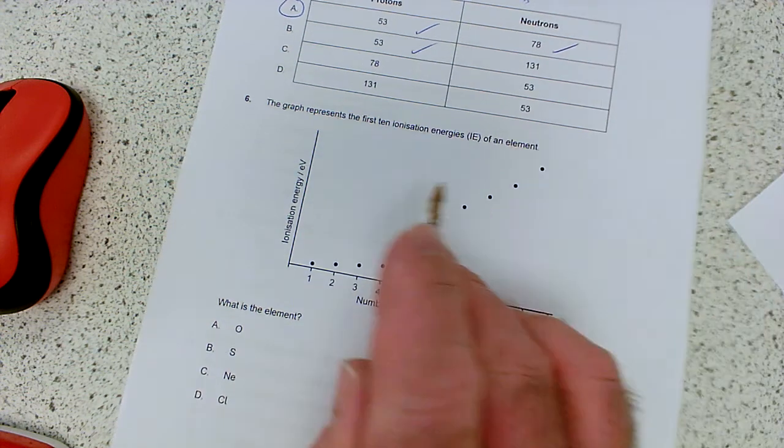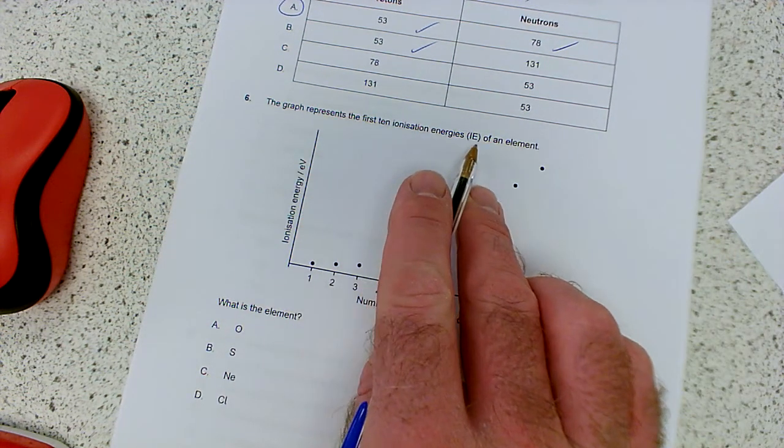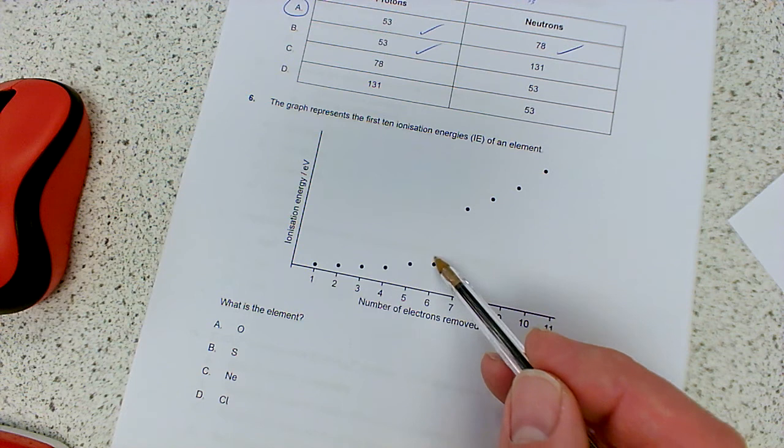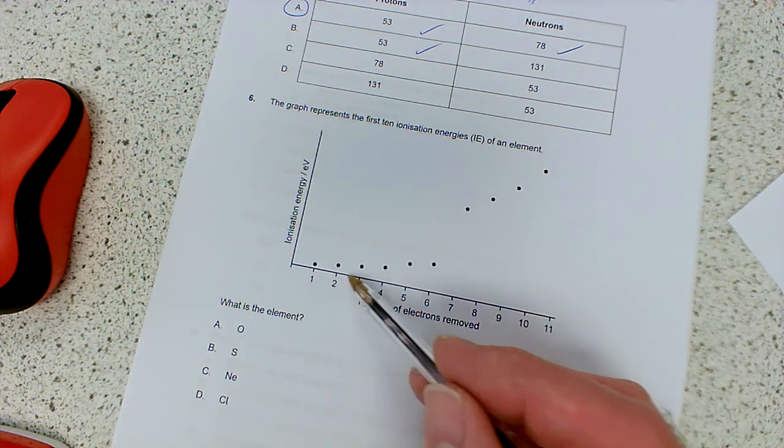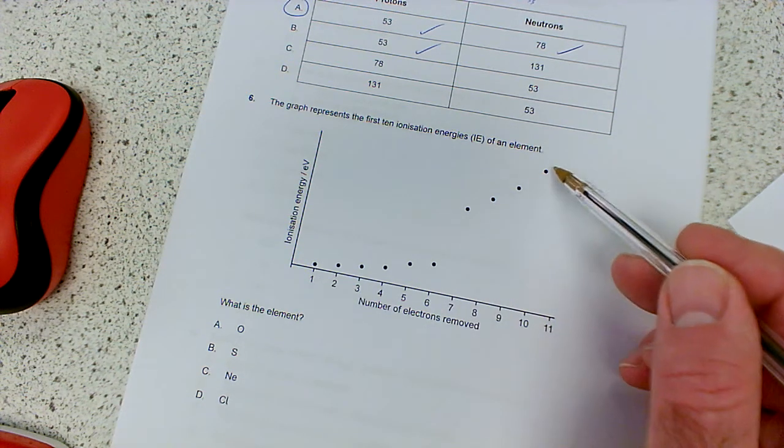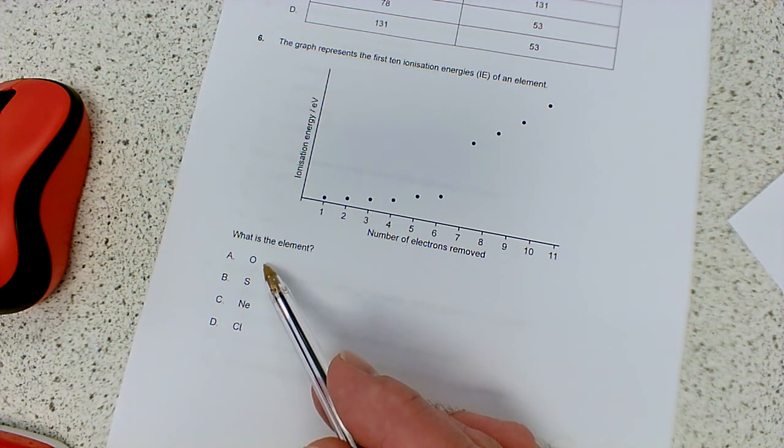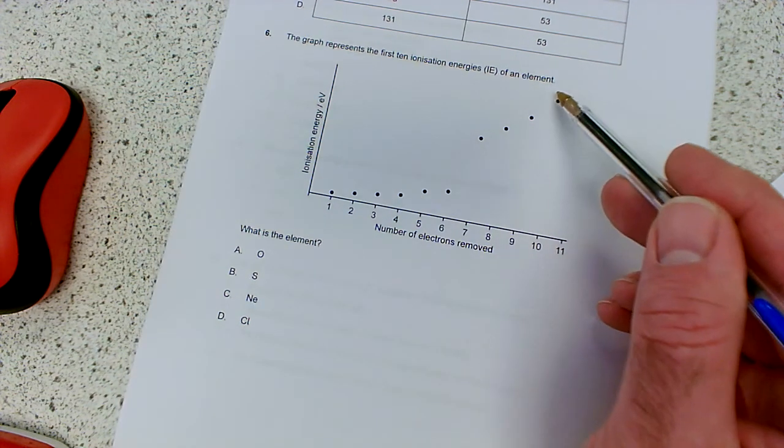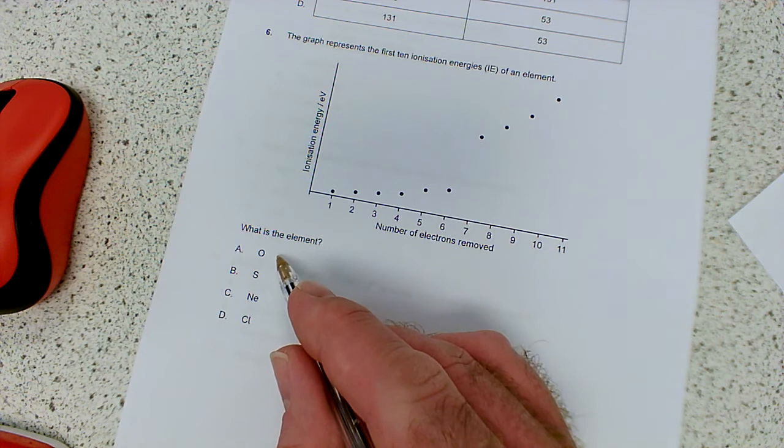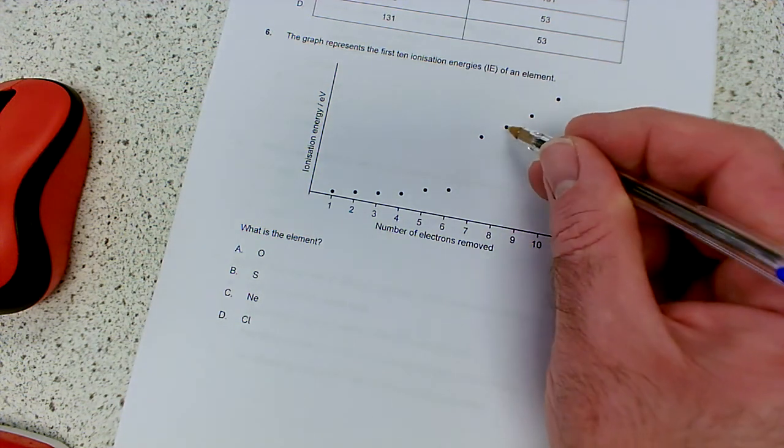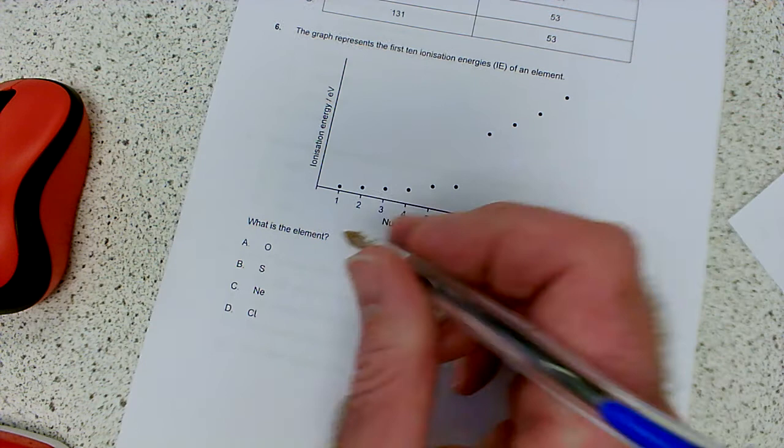The graph represents the first 10 ionization energies of an element, 1, 2, 3, 4, 5, 6. Ooh, big jump, looks like we're in group 6 for this element, because the first 6 were easy to remove, and now we're starting a new shell. So, oxygen's in group 6, but, wait a minute, this is the IB, they're going to be crafty. There's not enough electrons for oxygen. Oxygen's only got atomic number 8, and we've removed 10 electrons. So, oxygen, we would have had to stop here with 8 electrons.